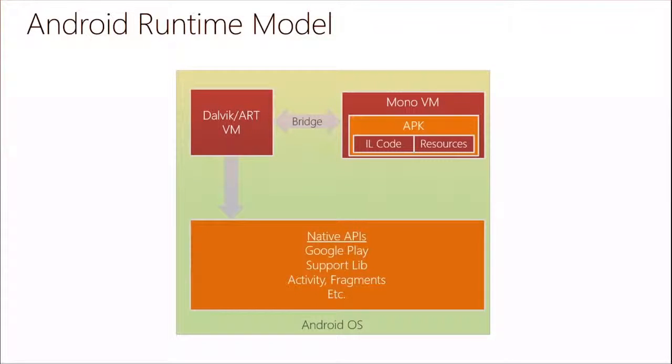So you can get down into native code. Just like iOS, on Android you can access Google Play, support libraries, activities, fragments, and you can also do bindings into Java libraries available for Java developers. We have full access to the Android platform with all the sensors and things in the phone, provided through the Mono VM — that's the .NET framework running on a non-Microsoft platform. What Xamarin does is provide a bridge into the Java VM — Dalvik or ART — which communicates down into the native platform.